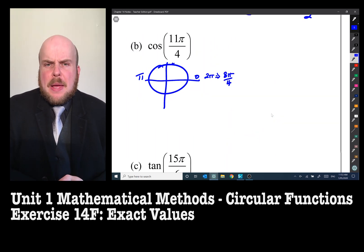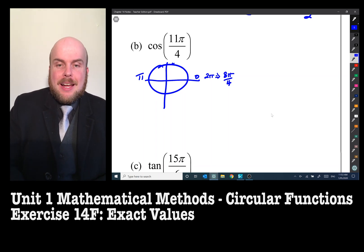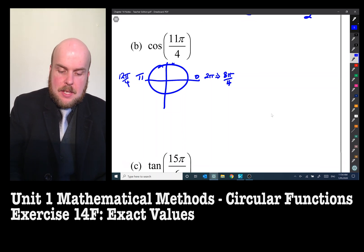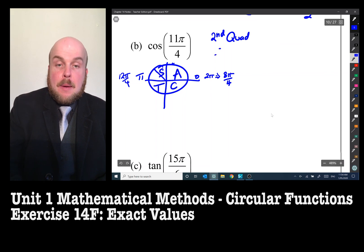So whereabouts is 11 pi on four? Well, I know that two pi is eight pi on four. How much would three pi be worth? Because that's the next one along. So three pi would be, four times three is 12 pi on four. So 11 pi on four is going to be less than that, so it's going to be in the second quadrant. And according to my positives and negatives, therefore it's going to be a negative answer.